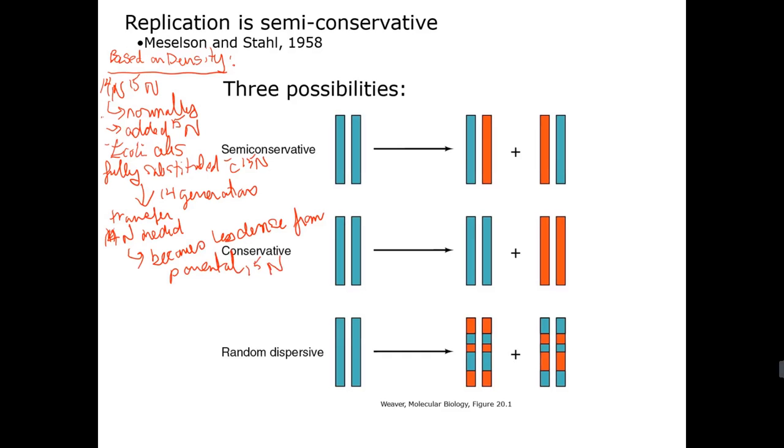And so then they allow the cells to continue to grow and replicate and divide in the presence of N14. And then they just sample at different times. So as they're growing in the N14 they sample at different times.